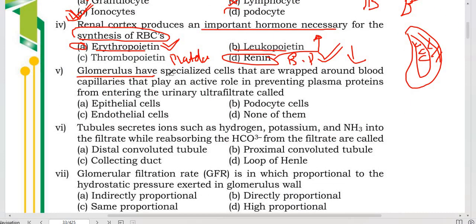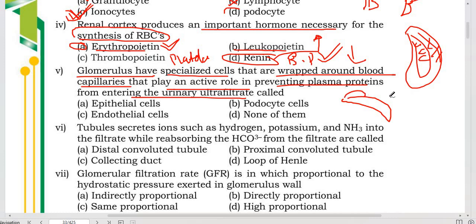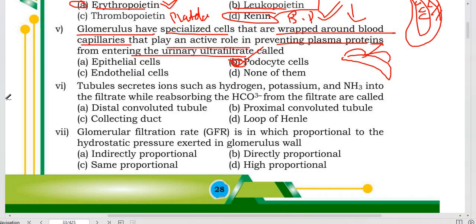In the glomerulus there are specialized cells wrapped around the blood capillaries that play an active role in preventing plasma proteins from entering the urine ultrafiltrate. These cells prevent protein from going into your urine, and they are called podocytes.